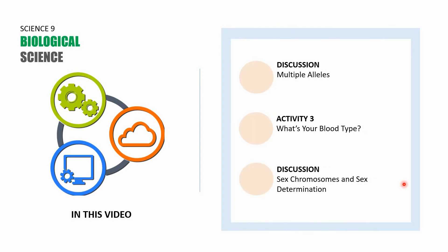As a quick recap: the first part covered multiple alleles — I^A and I^B are dominant, can be co-dominant with each other, and lowercase i is the third allele, which is why it's called multiple alleles. Activity 3 was 'What's Your Blood Type,' where you completed two tables and answered three questions about possible blood types from different parental combinations. The last part covered sex chromosomes and sex determination — an X egg fertilized by an X sperm produces a female, while an X egg fertilized by a Y sperm produces a male.